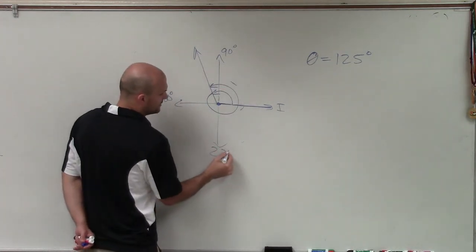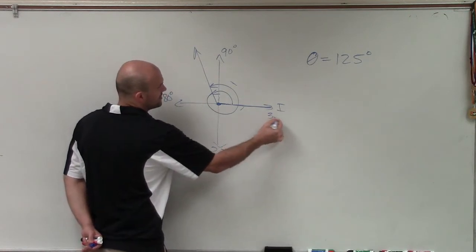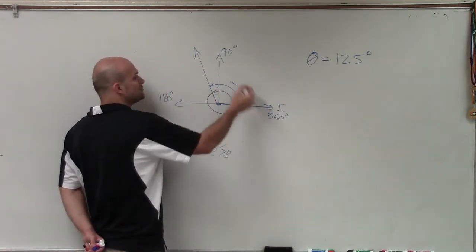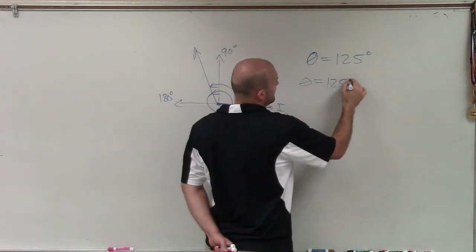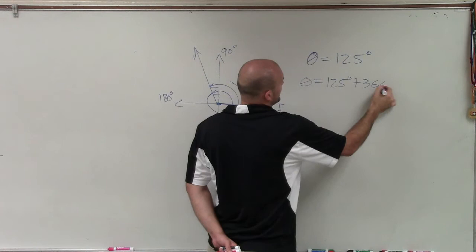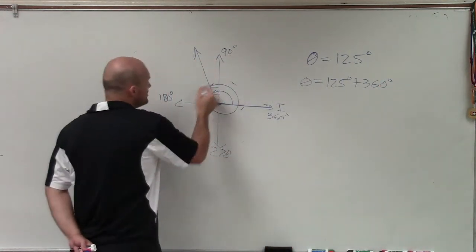Because if this is 180, that's 270 degrees, this would be 360 degrees. So I did an extra revolution. So to find the smallest coterminal angle, I just take 125 degrees plus 360 degrees. Because you can keep on adding, right?